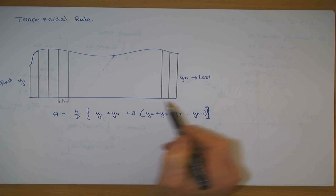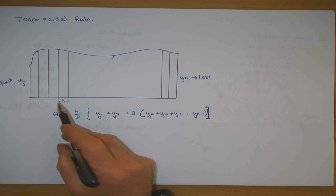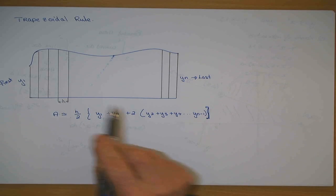The smaller the distance between each rectangle, the more accurate your approximation is.